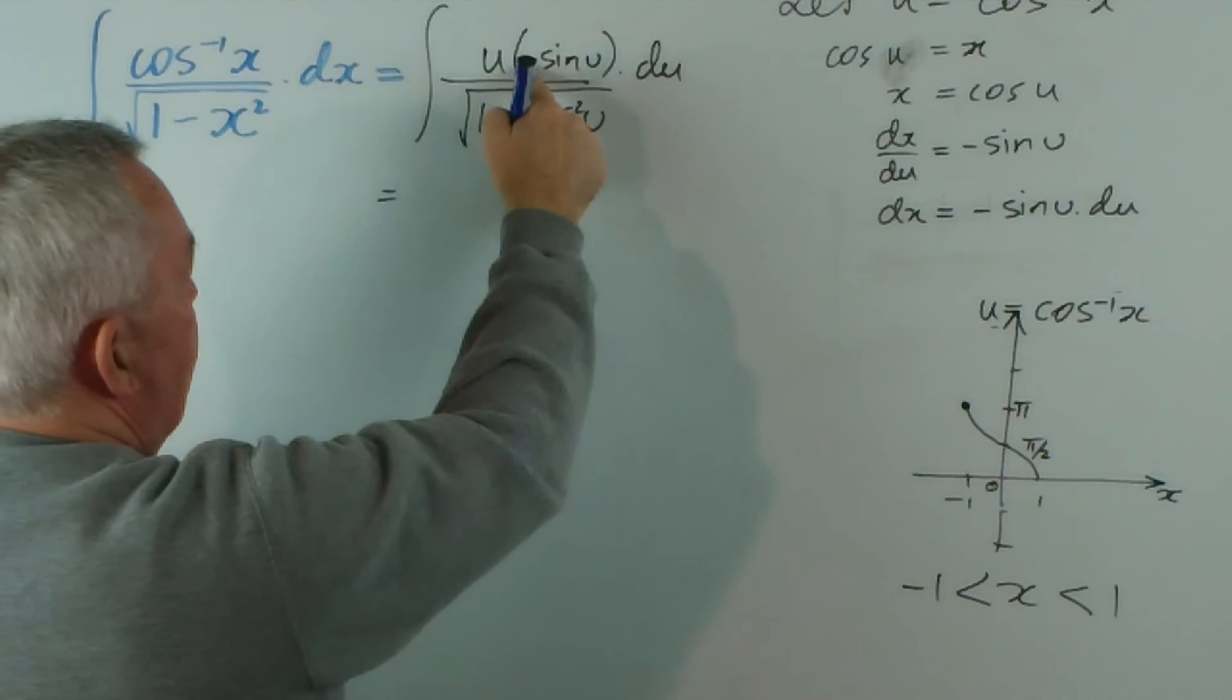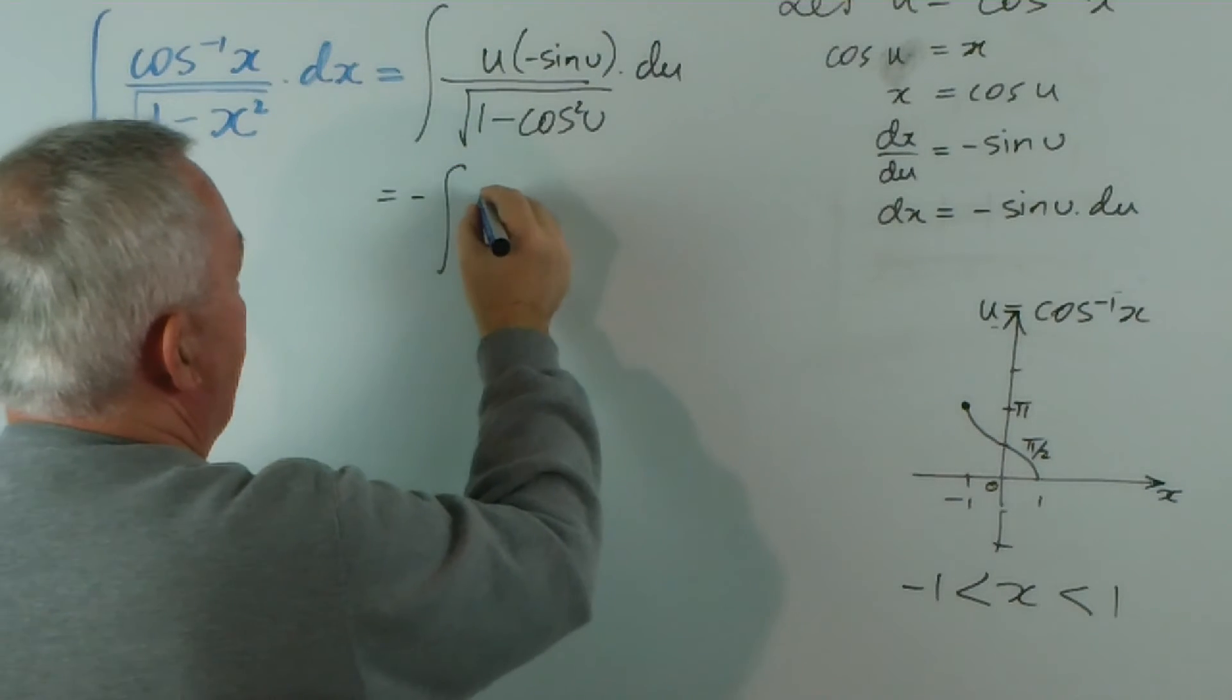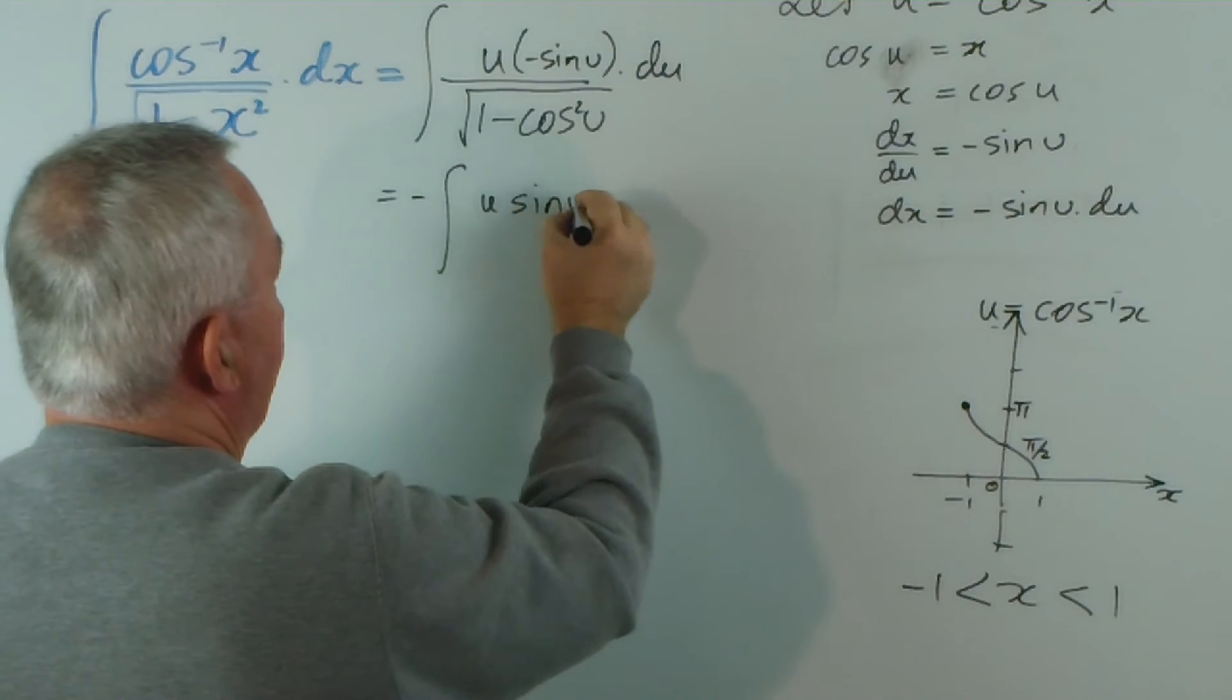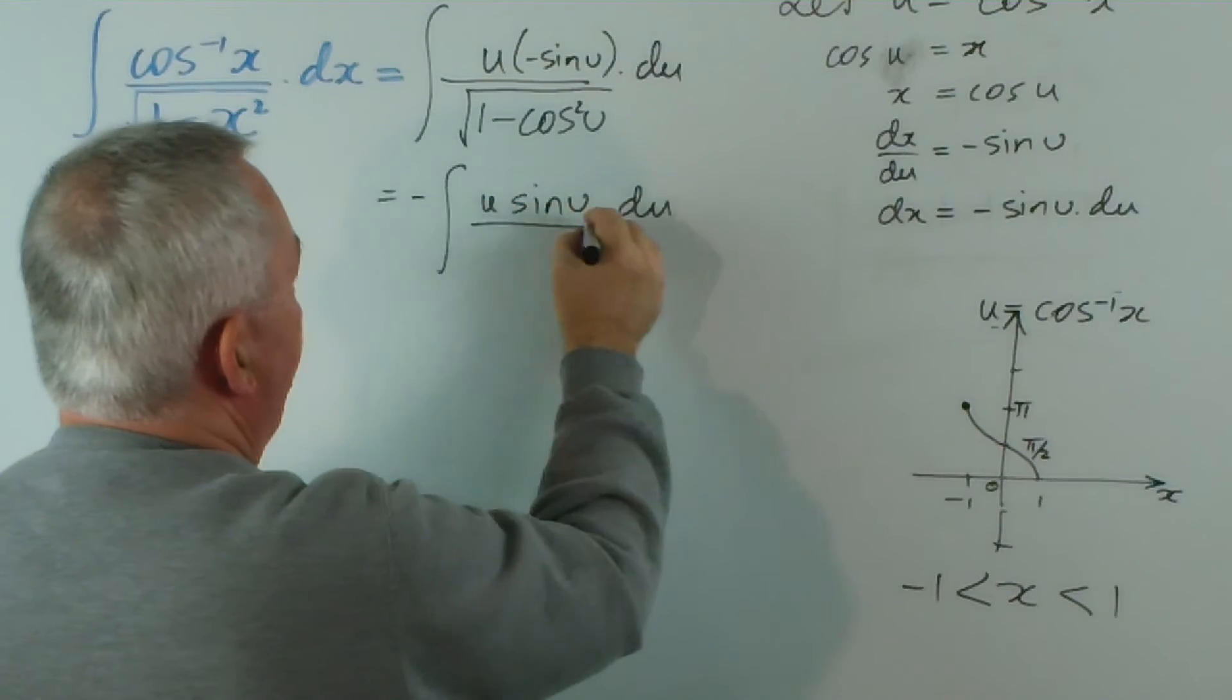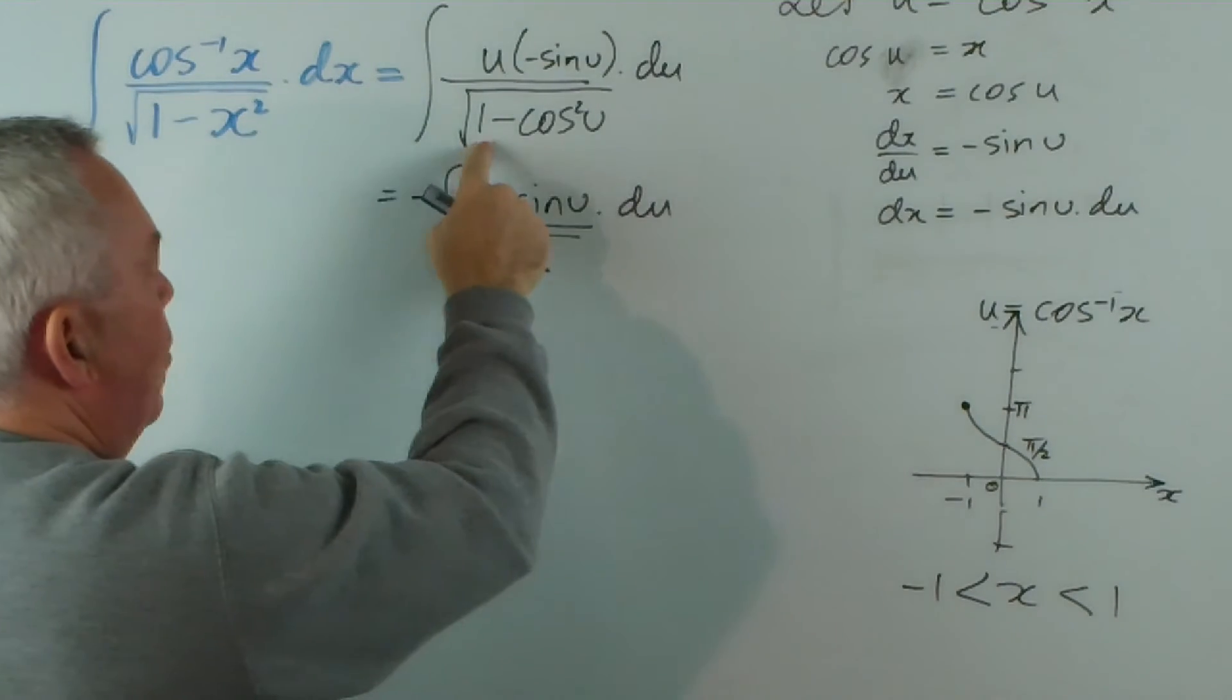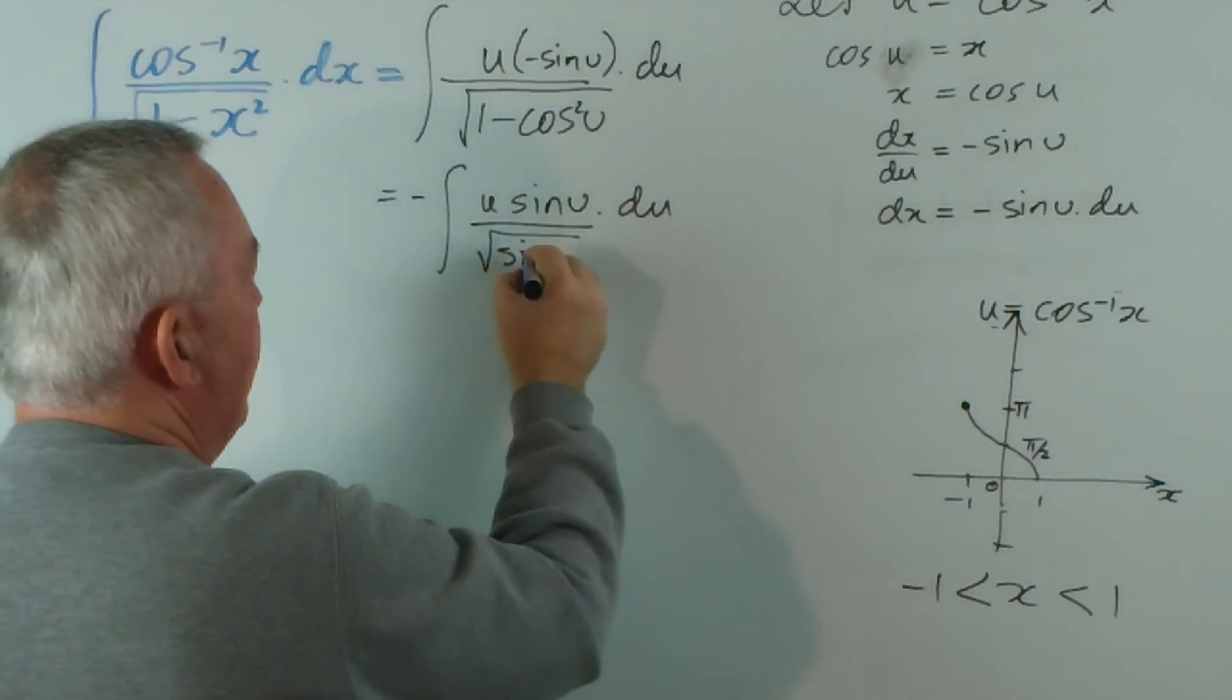I'm going to move this negative sine out the front, and we have u sine u du. And here we have the square root of 1 minus cos squared u is sine squared u.